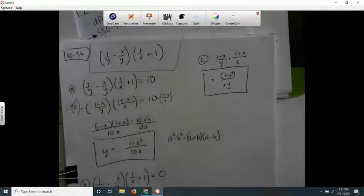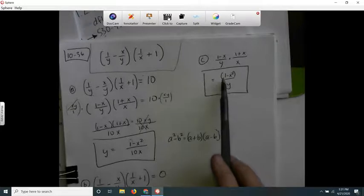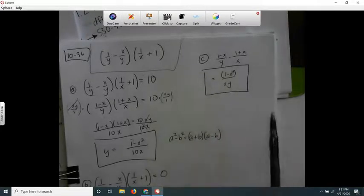You'll have 1 plus x over x. When I multiply them together, the bottom part becomes xy. The top, since it's 1 minus x times 1 plus x, follows the difference of squares pattern.